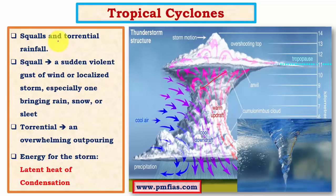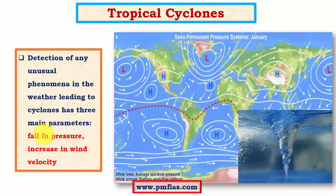Tropical cyclones are associated with squalls and torrential rains. Torrential rains are very intense rainfall with huge drop size, and a squall is a sudden violent gust of wind associated with intense rainfall or snowfall. To drive a tropical storm of this large scale, a lot of energy is needed, and this energy is supplied in the form of latent heat of condensation.